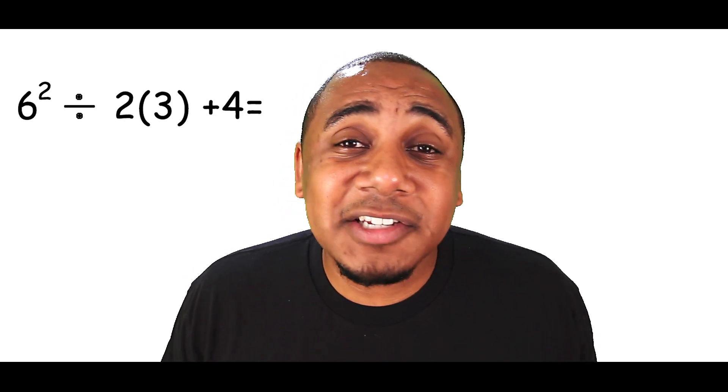So getting right to the solution of the problem, let's get rid of the parentheses. In this problem, there's a 3 inside the parentheses with no other operators — no addition, subtraction, multiplication, or division. Since the parentheses are next to another variable or integer, the parentheses represent multiplication. So to get rid of those parentheses, we substitute them by putting times 3. So now we read: 6 squared divided by 2 times 3 plus 4.